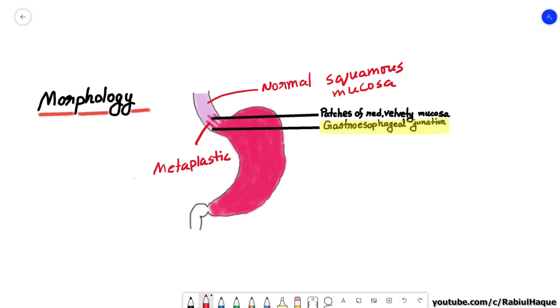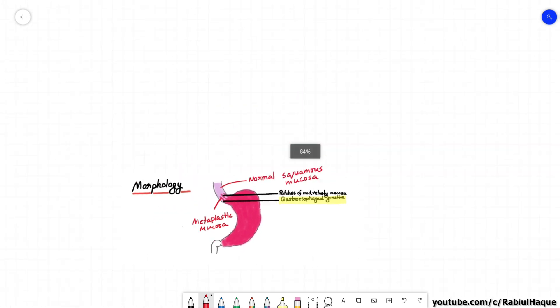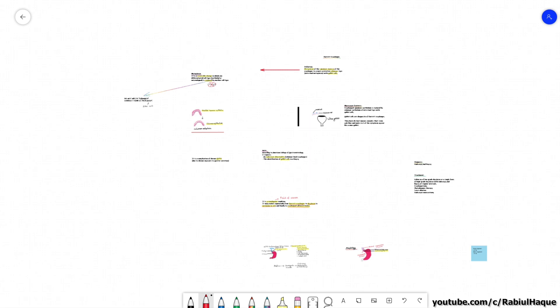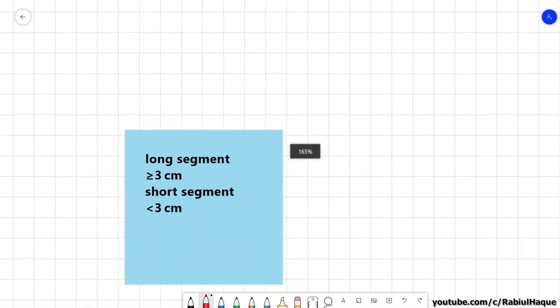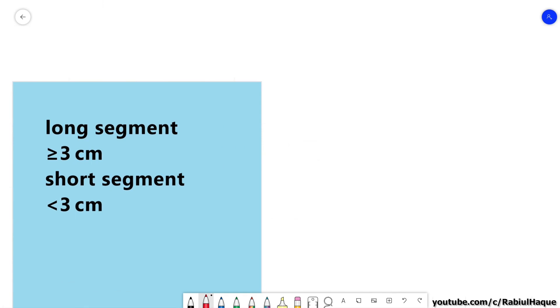That is the first thing that you have to remember regarding morphological feature. And one additional thing you have to remember is that we can classify Barrett esophagus according to the length of these segments. If the length is more than three centimeter or equals to three centimeter we will say that these are long segment, and if the length of these segments are less than three centimeter then that is classified as short segment.